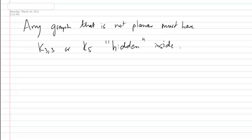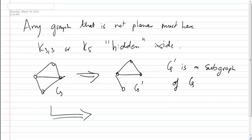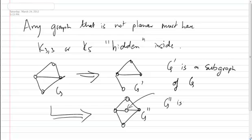So what does 'hidden' mean? Let's define some operations on a graph. Take a graph G and remove an edge — the result G′ is called a subgraph of G. Alternatively, take a graph G and insert a new vertex into it along an edge — so you place a new vertex in the middle of an existing edge. Let's call this G″. G″ is called a subdivision.